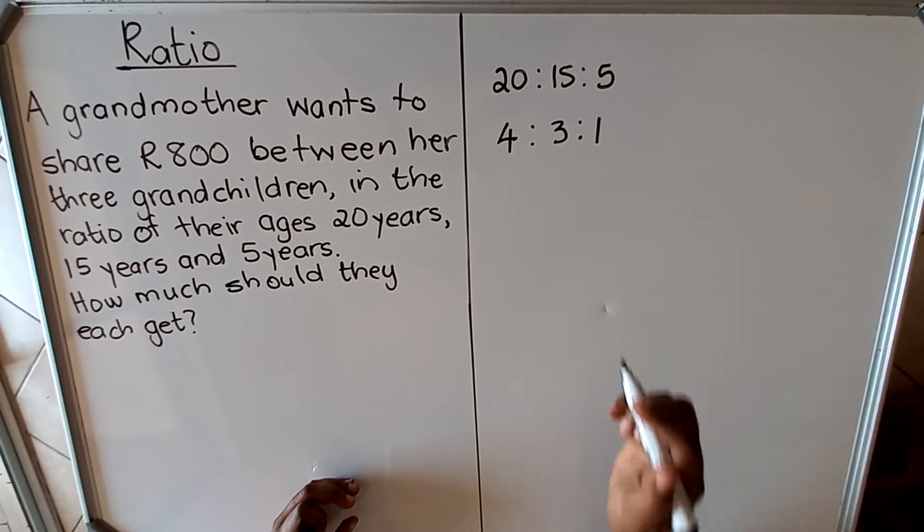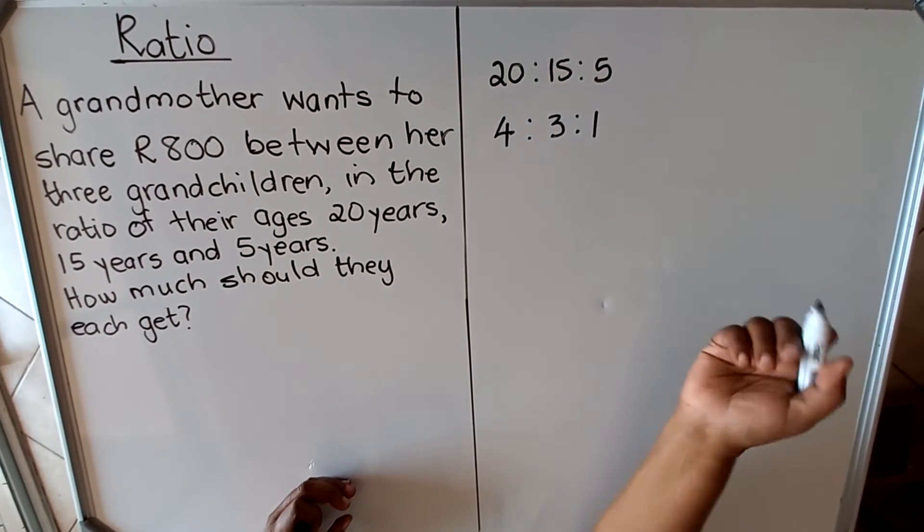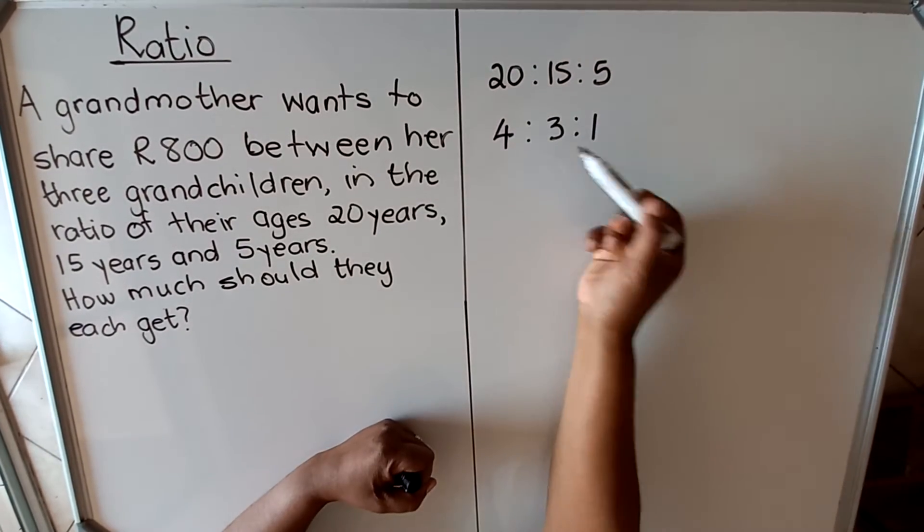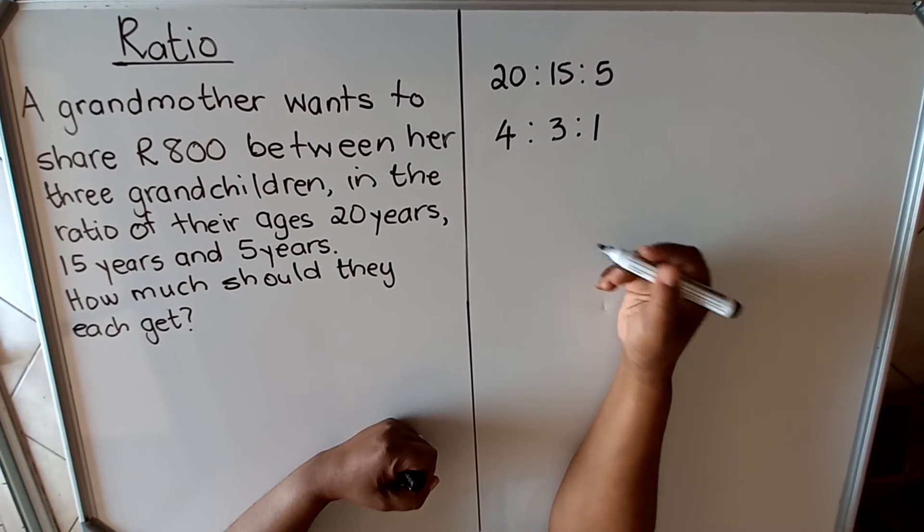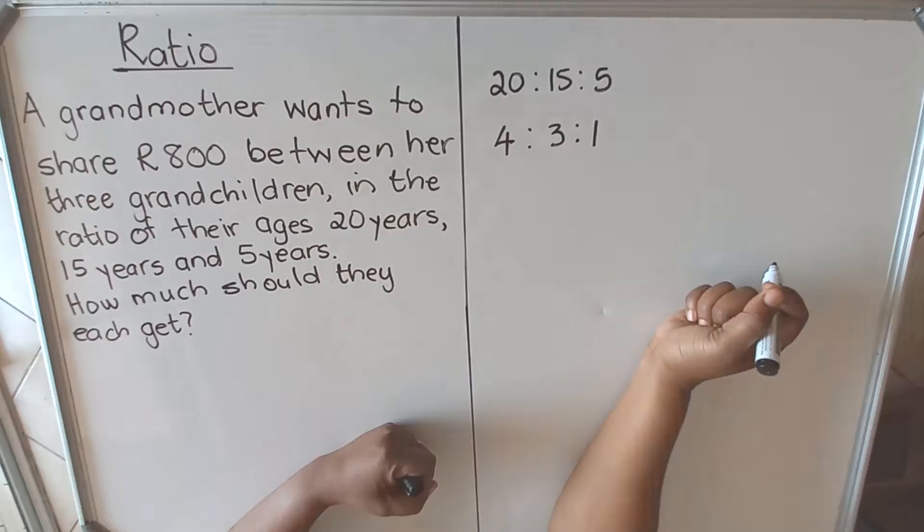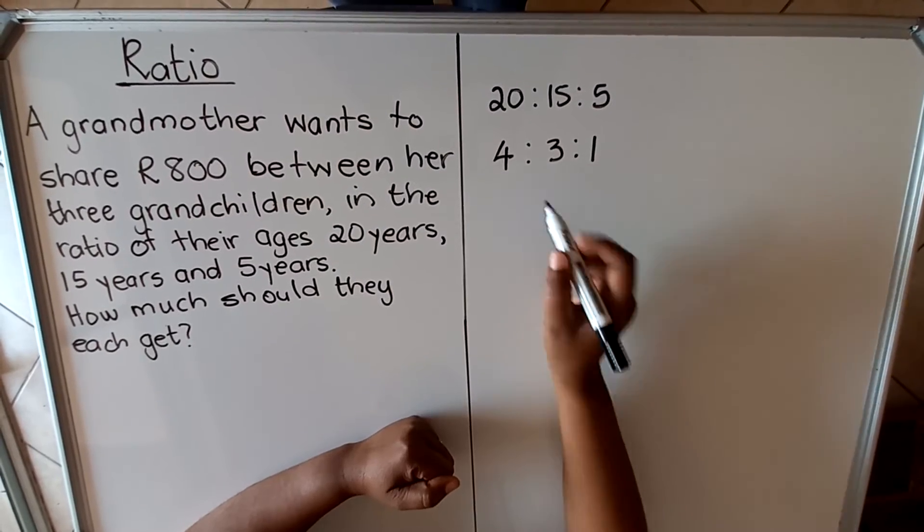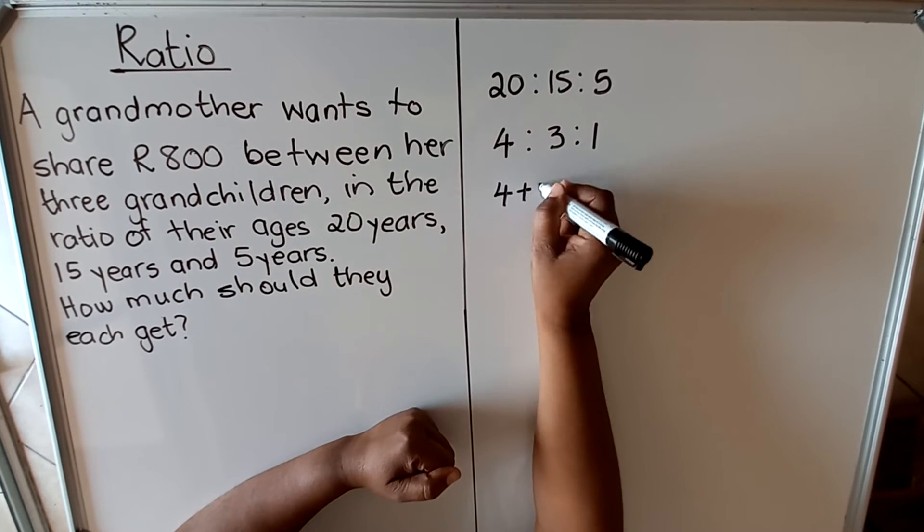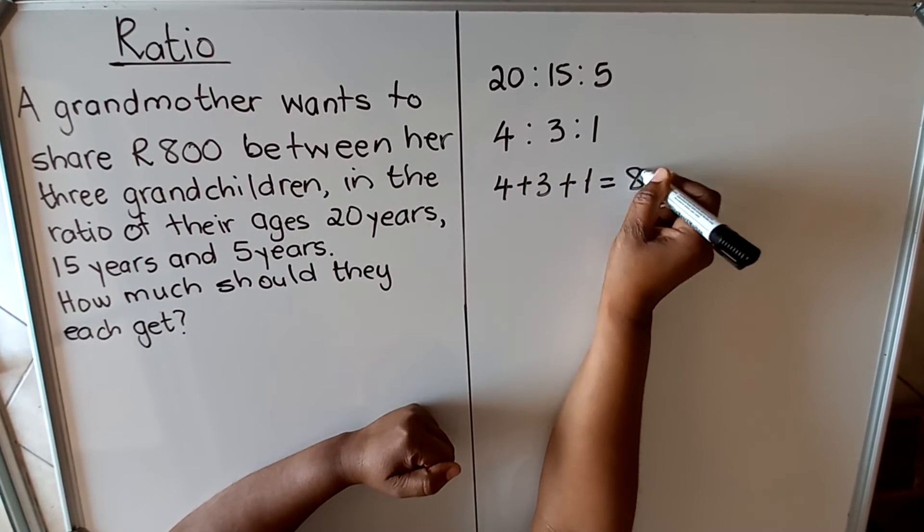When we're dealing with the equation of ratio, you need to simplify the ratio if it's possible first. So we have done that. Then we can continue with the sharing of the amount. Next step is to add the ratios. So 4 plus 3 plus 1, and then you get an 8.